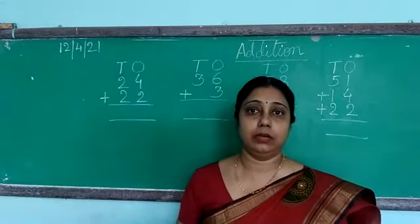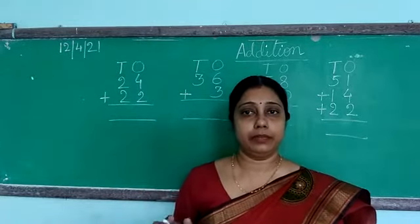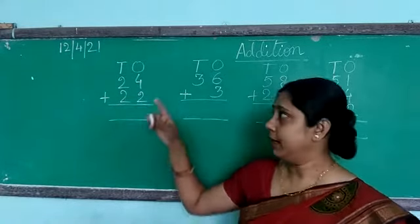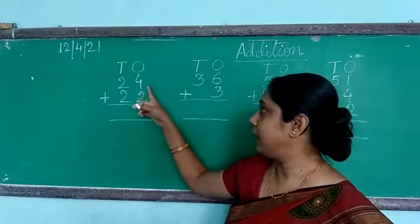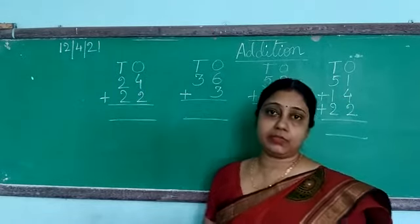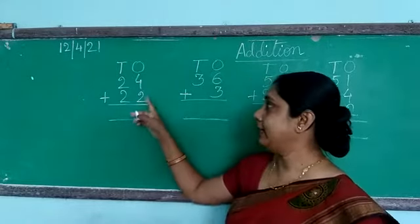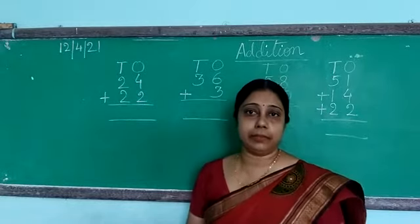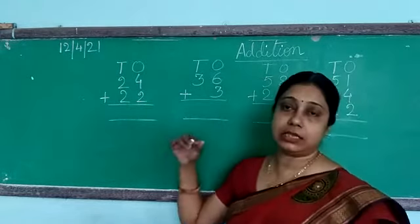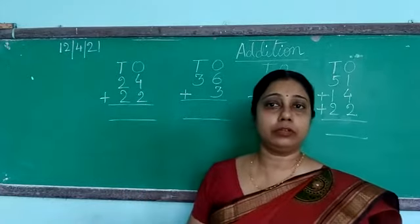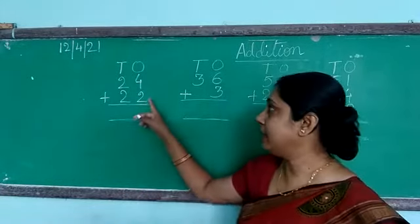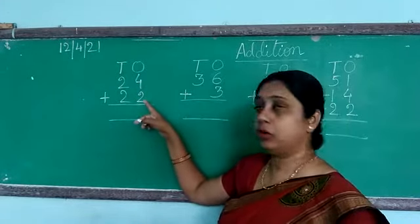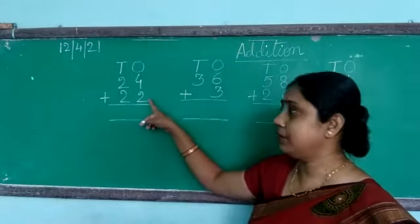In my next video I will show you how we should carry and add. Now the question is 24 plus 22. In the ones place the digits are 4 and 2. In the previous video I told you the properties of addition — either you add 2 plus 4 or 4 plus 2, the answer will remain the same. So whichever is easier or convenient for you, you do the same.